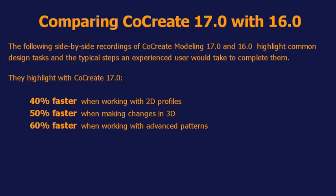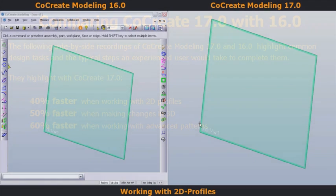If you're familiar with the CoCreate 17 sneak peeks, you'll have seen the models and actual tasks I'll compare. With 17, I've seen a doubling of my design productivity — specifically reducing the time spent creating 2D profiles by 40%, modifying models up to two times faster, and reducing the time spent working with advanced 3D patterns by 60%. During the real-time comparison, CoCreate Modeling 17 will run on the right-hand side of your screen and CoCreate 16 on the left. After the upgrade training for 17, I was quickly able to take advantage of the new release.